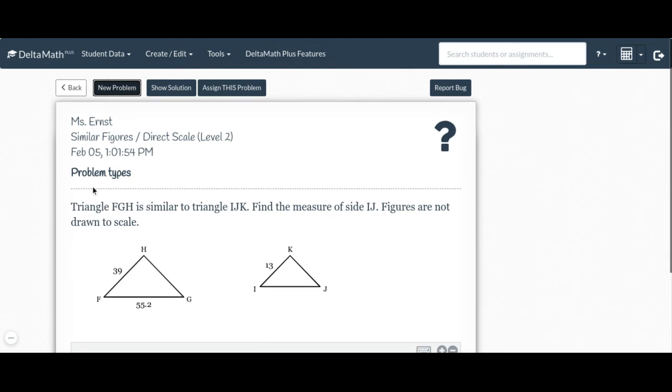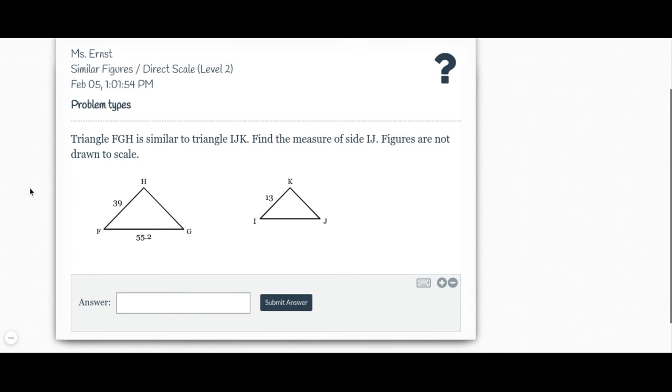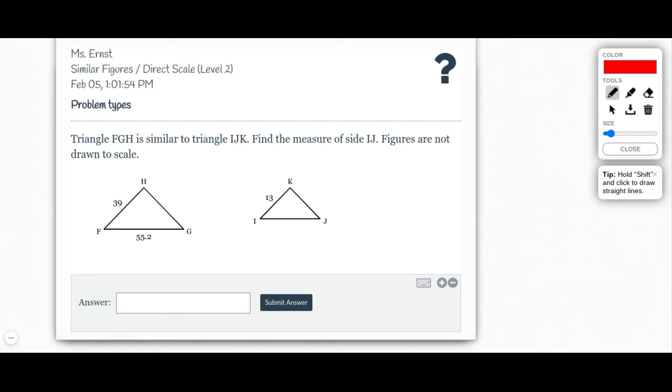All right, we'll do one more. We go triangle FGH is similar to triangle IJK. Find the measure of IJ. The figures are not similar.